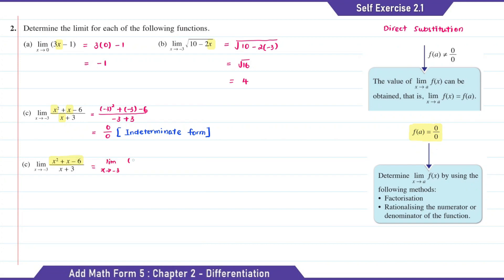The numerator factorizes to (x plus 3)(x minus 2) over (x plus 3). So here we can cancel the x plus 3. Then what's left will be x minus 2. So when we substitute x with negative 3, it will be negative 3 minus 2, which is equal to negative 5. Then that will be the limit value for Question C.